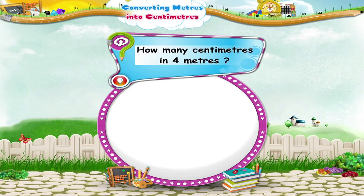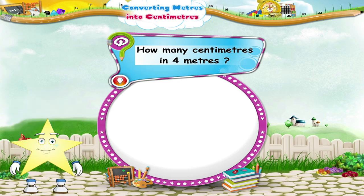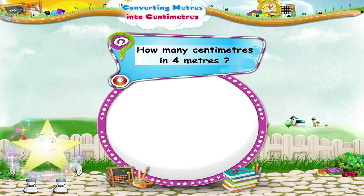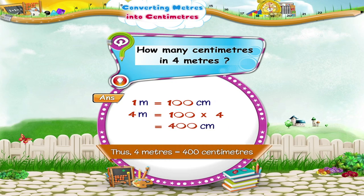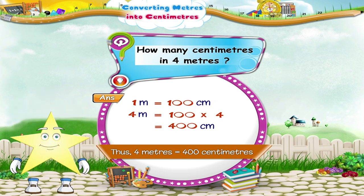How many centimeters in 4 meters? How many centimeters in 1 meter, Starry? Good! 1 meter equals 100 centimeters. So 4 meters equals 100 into 4, which is 400 centimeters.